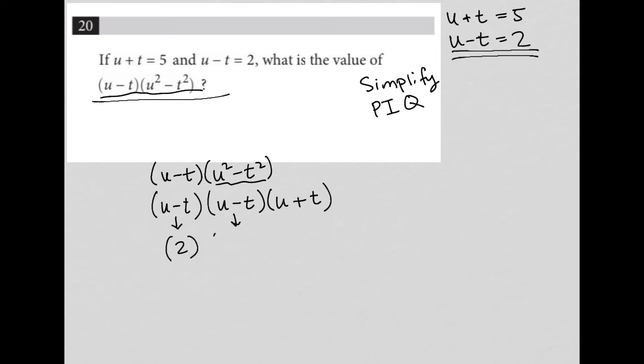So that becomes 2, and that becomes 2. And I know that u plus t is 5, so this becomes 5.